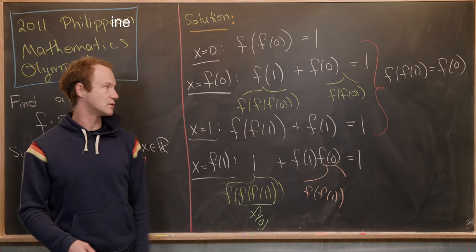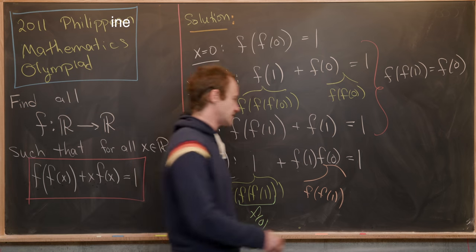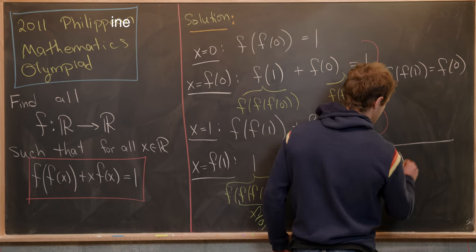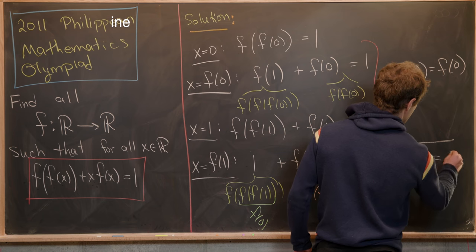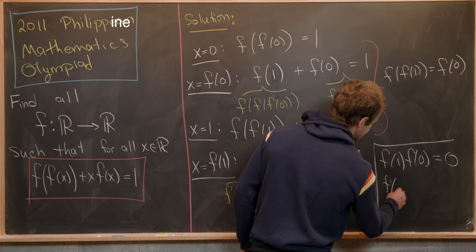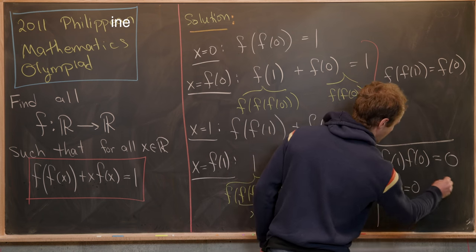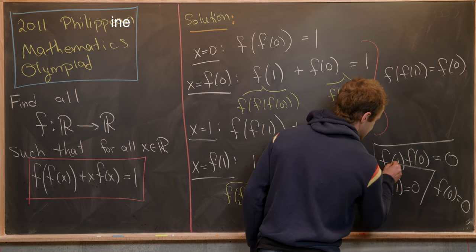But now notice the 1s will cancel from both sides of the equation. And we end up with f(1)·f(0) = 0. Which brings us to two cases, f(1) = 0 or f(0) = 0.